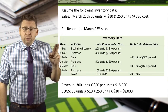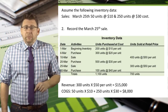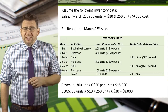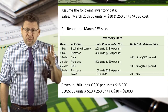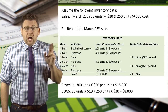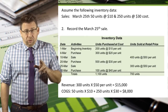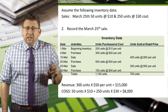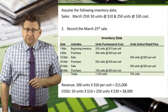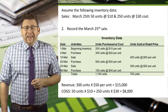In order to record the March 25th sale, we need to figure out the sales revenue amount and cost of goods sold. We sold 300 units at $50 each, so sales revenue is $15,000. The cost of the 300 units sold is $8,000. I know this because we sold 50 units that cost $10 and 250 units that cost $30. Those total $8,000.